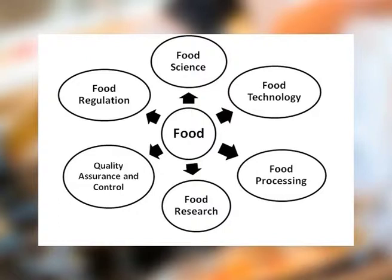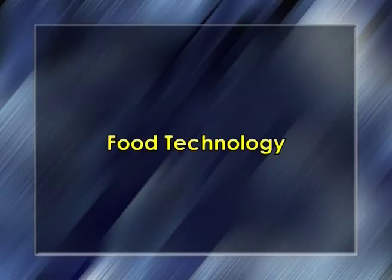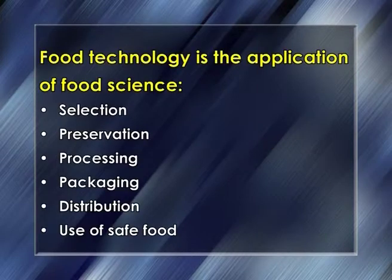Associated with food science are various areas of practical importance. Food technology is the application of food science to the selection, preservation, processing, packaging, distribution and use of safe food.